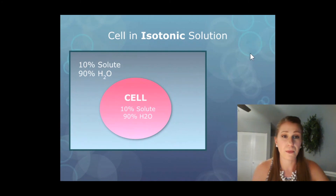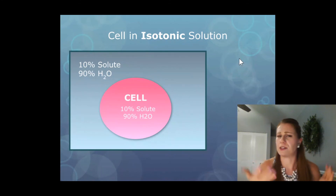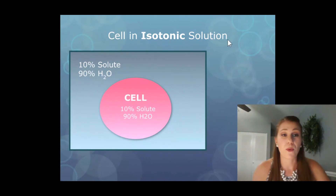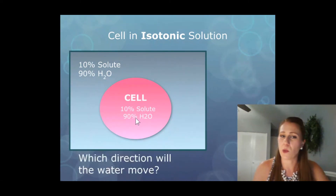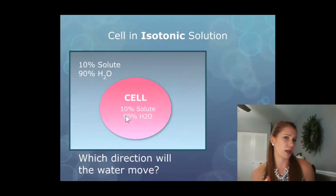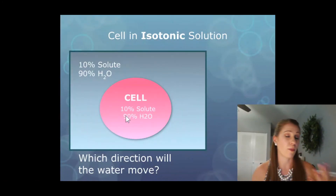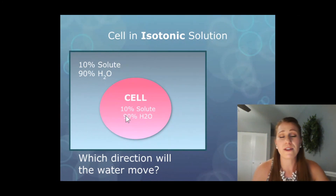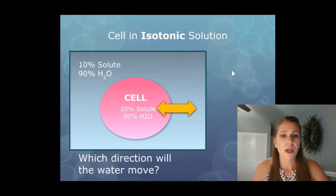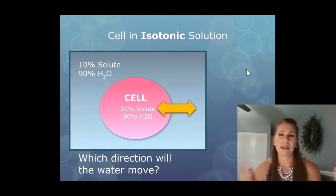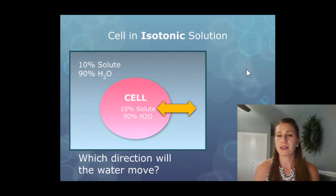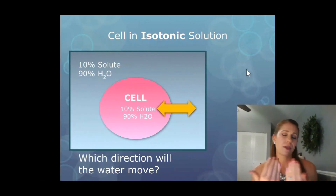One final example: a cell in an isotonic solution. Now, didn't we just say it's equal? We did. But remember, once it's equal — 90% water outside and 90% water inside — it doesn't mean that nothing will happen. We always constantly have motion in our bodies and cells and tissues. So instead of nothing going anywhere, water will in fact go both directions. Water will go in and out of the cell because that movement is constant. But because it's isotonic and we're at homeostasis, it will just keep going back and forth in a nice even manner.